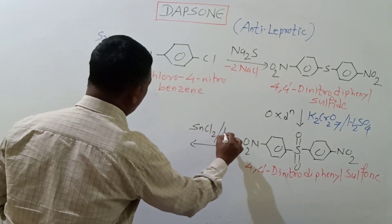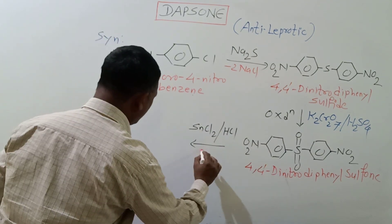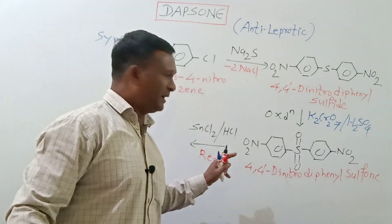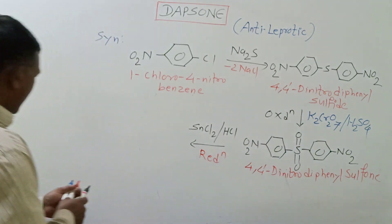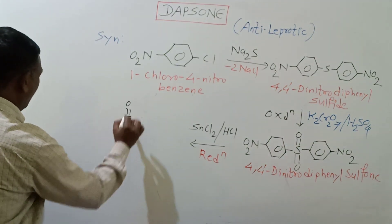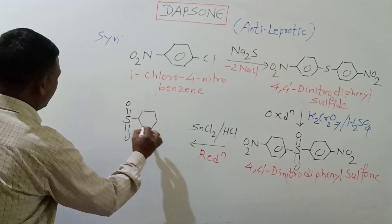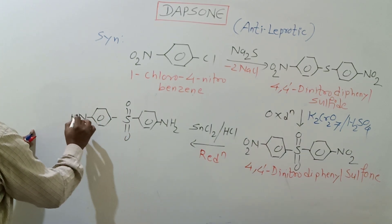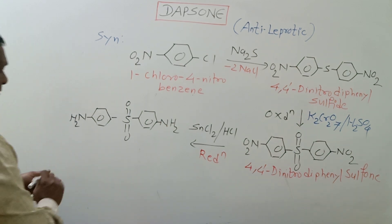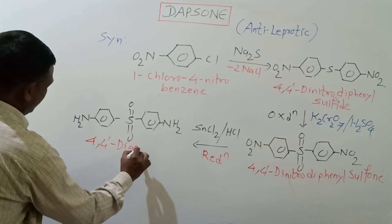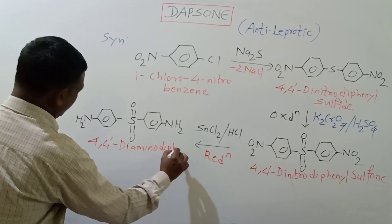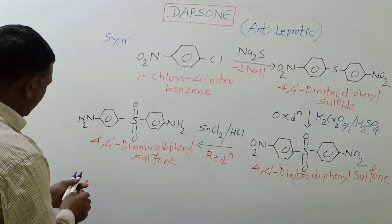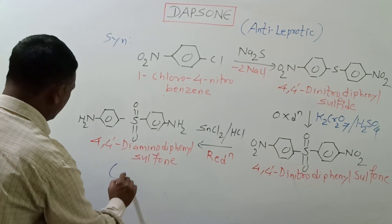This sulfone derivative then on reaction with SnCl2 and HCl undergoes the process of reduction. By reduction, both the nitro groups are converted to the corresponding amino groups. In this way we obtain our desired product, which is called 4,4'-diaminodiphenyl sulfone — and this is the title product called Dapsone.